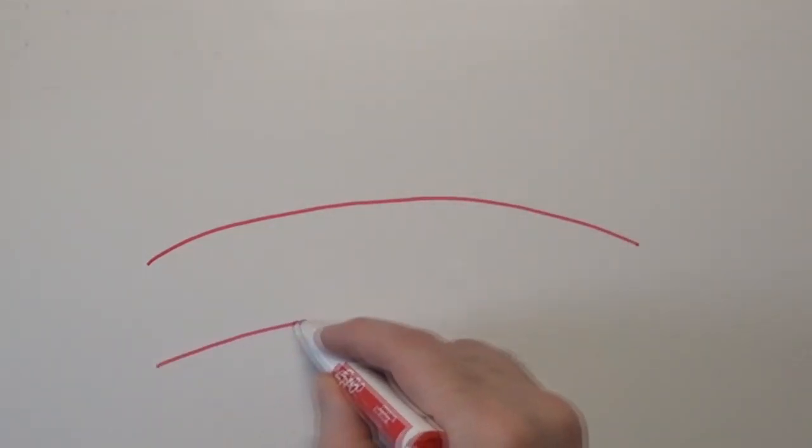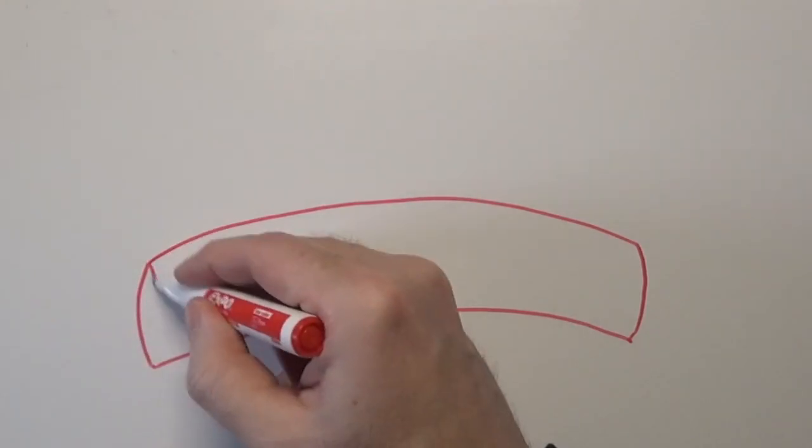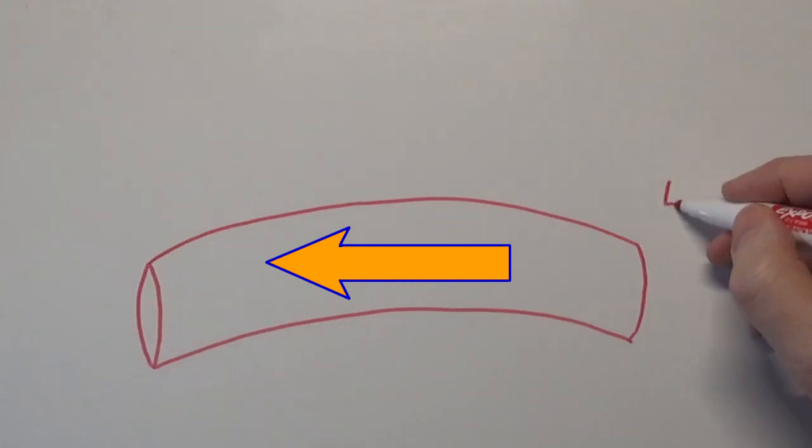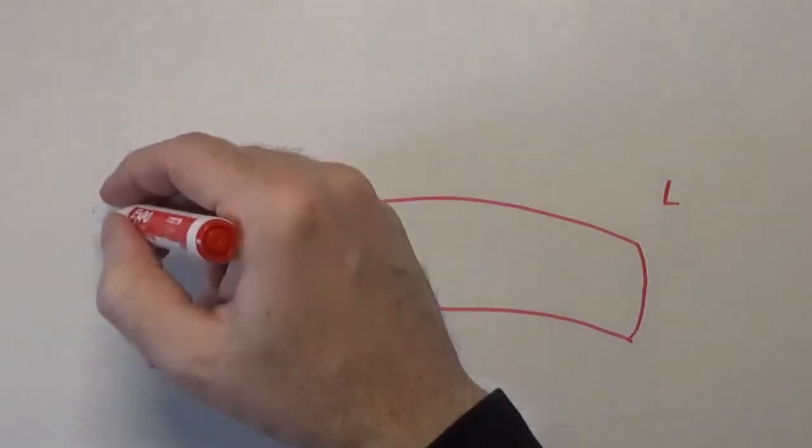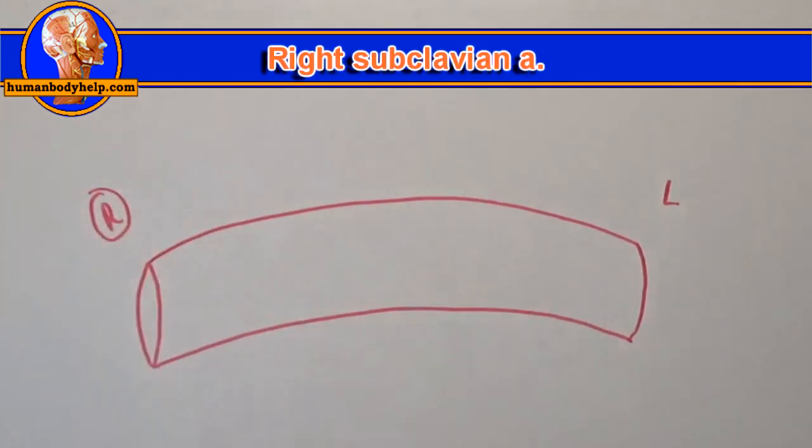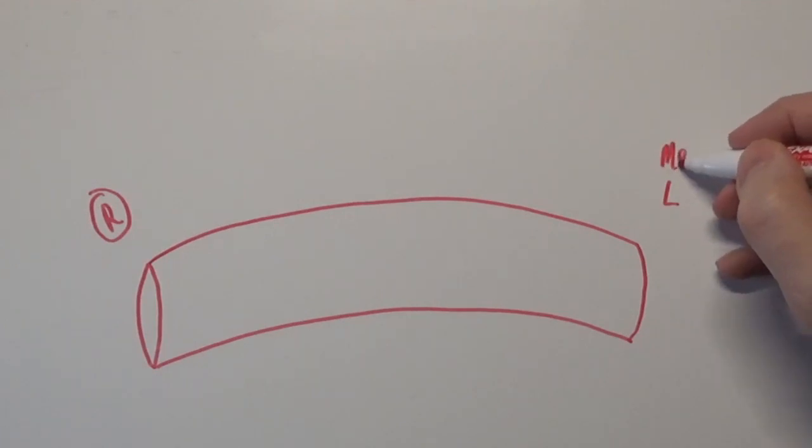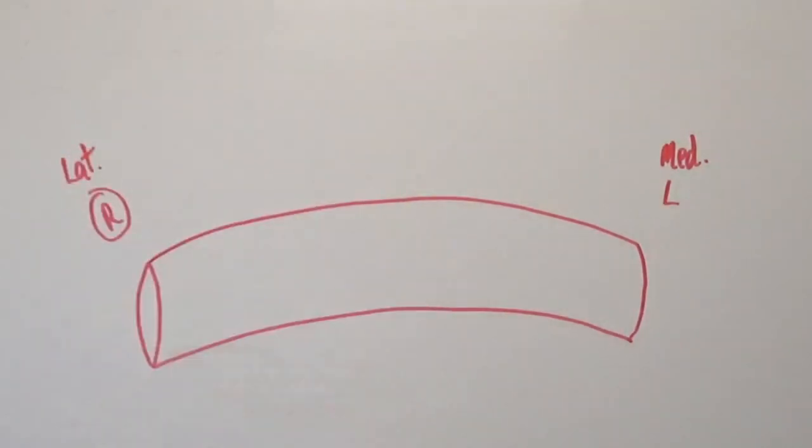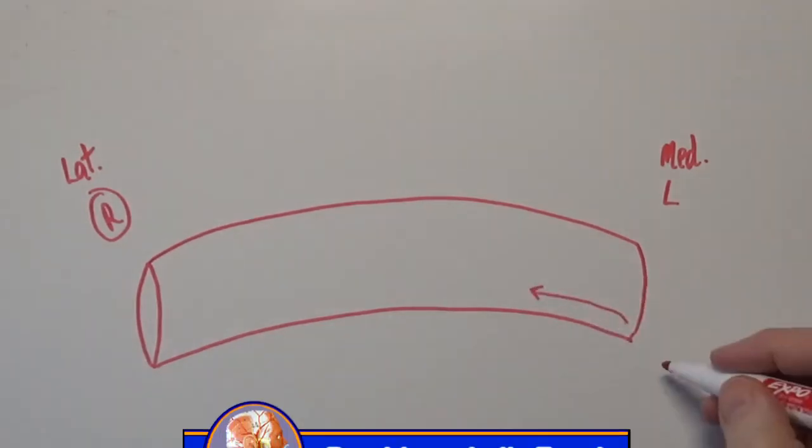The first thing we'll do is draw a horizontal tube representing the subclavian artery. Now this will be the right subclavian artery, so blood will move through it in this direction from left over here to right over here. I'll circle the R to remind us that we're drawing the right subclavian artery. We can also say this is medial over here and over here this would be lateral. So remember blood's flowing through in this direction.